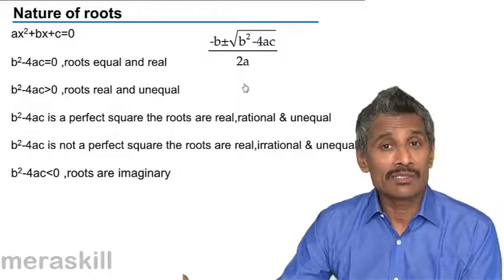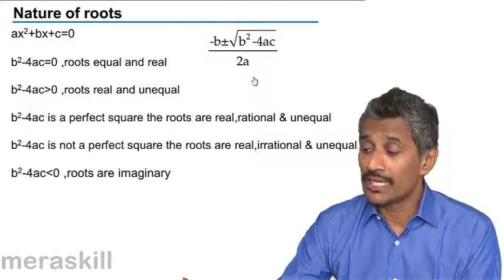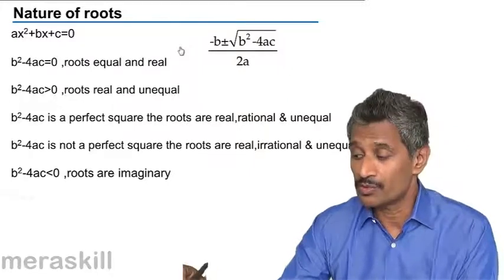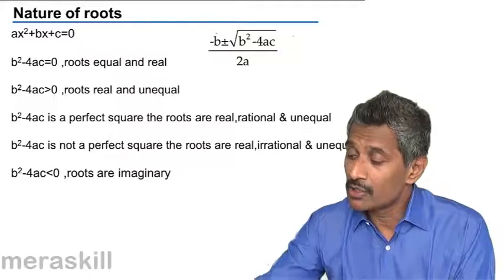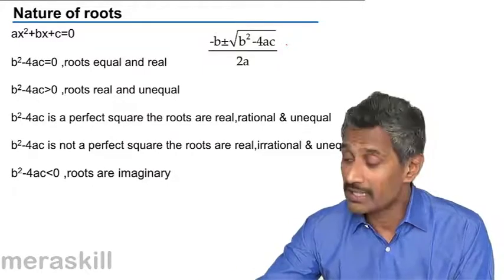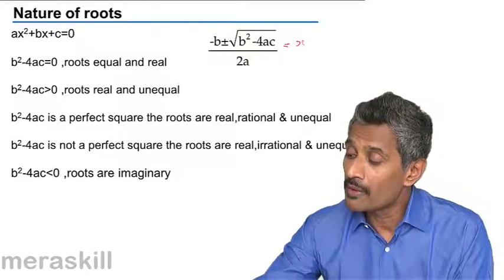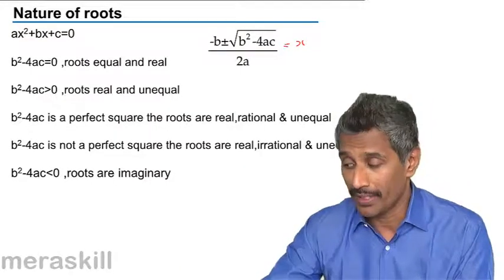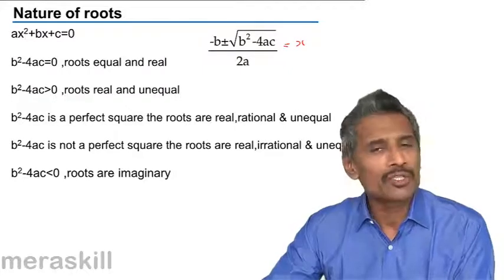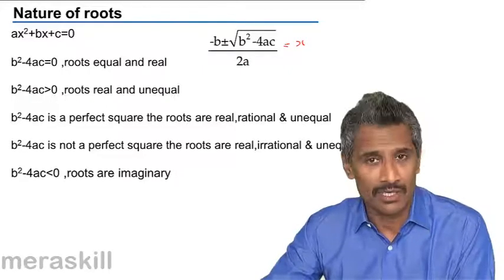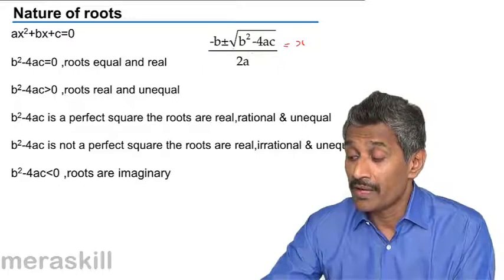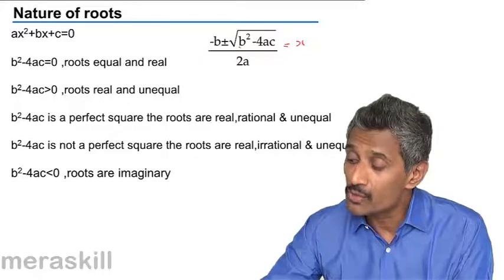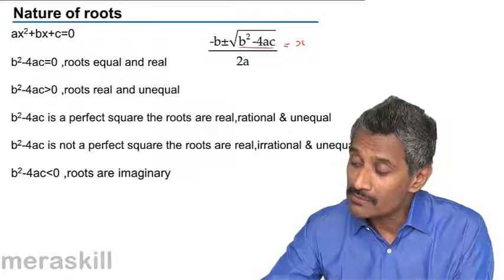Now we understood the number system and quadratic equations. We need to move over to the nature of roots. Whenever we find the roots of a quadratic equation, they are of the form: minus b plus or minus root of b squared minus 4ac, upon 2a. Now, minus b and 2a are rational numbers. The deciding factor that is going to determine the nature of roots is b squared minus 4ac.